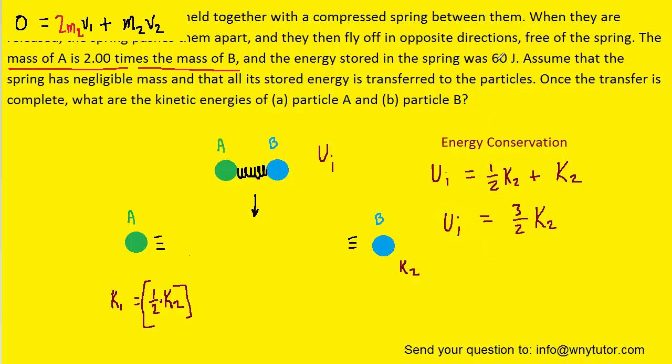The initial potential energy stored in the spring was given as 60 joules. And when we finish off solving this, we should get 40 joules is equal to k2.